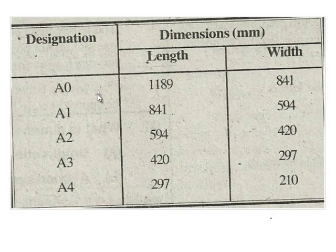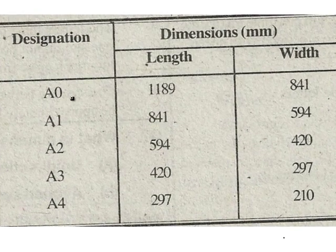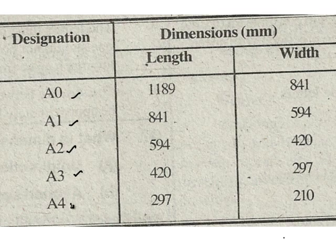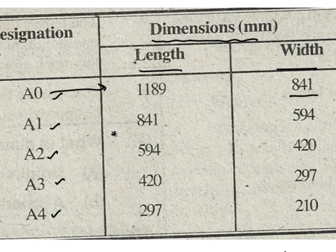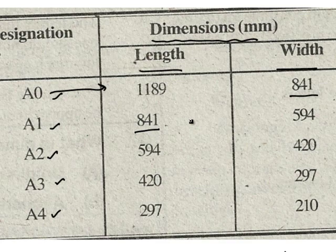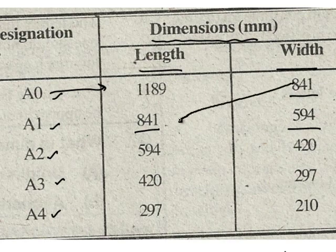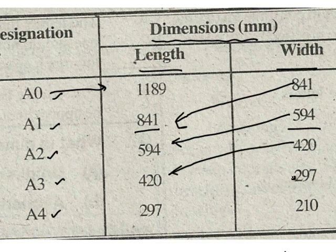Now let's study about the different types of drawing sheets available in the market for drafting. In this table we can clearly see the types of drawing sheets: A0, A1, A2, A3 and A4 size papers. The dimensions are given on the right side of the table — length and breadth. For an A0 paper the length is 1189 mm and width is 841 mm. The A1 size paper has a length of 841 mm and a width of 594 mm. The width of the A1 size paper becomes the length of the A2 size paper, and this pattern is followed for every paper sheet.